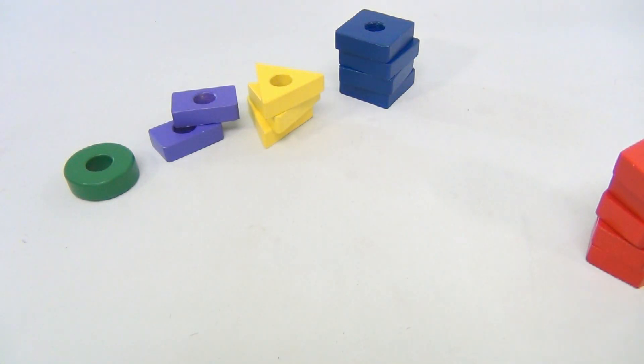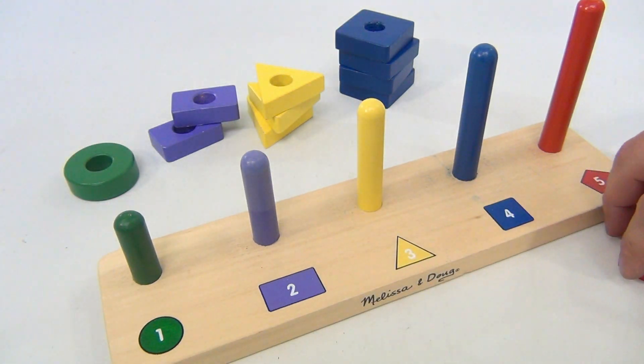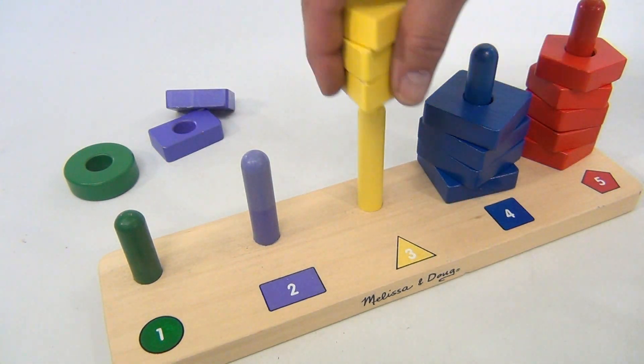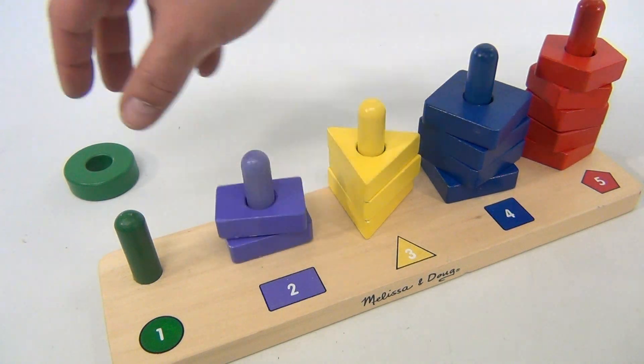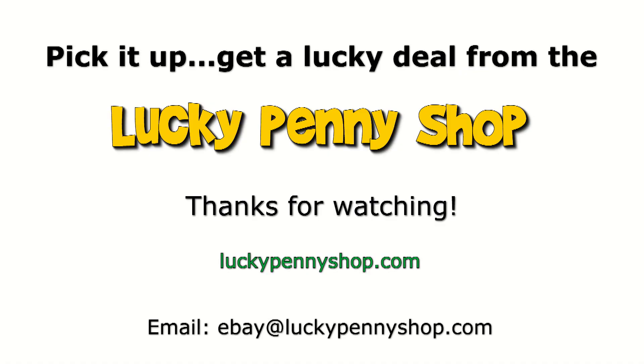There you go. So let's put them all back. There's some coordination skills, some counting skills, color skills. Hey, I got the skills! Thanks for watching our eBay product video, and always remember if you see a lucky penny, pick it up.